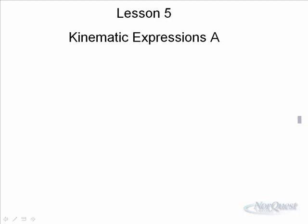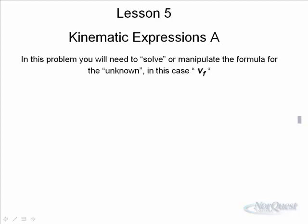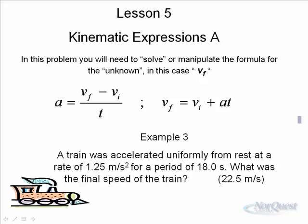In this final example using this formula, we'll again have to manipulate the formula for the unknown. In this case, the unknown is going to be vf. What I'll do is I'll give you the initial velocity, I'll give you the acceleration and the time, and I'll say you're going at a certain speed, you accelerate at a certain rate for a certain period of time, and what is your final velocity.